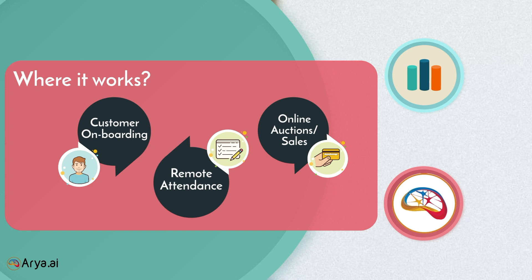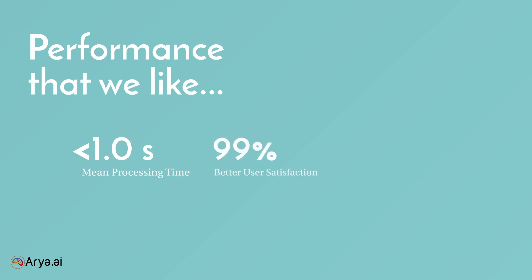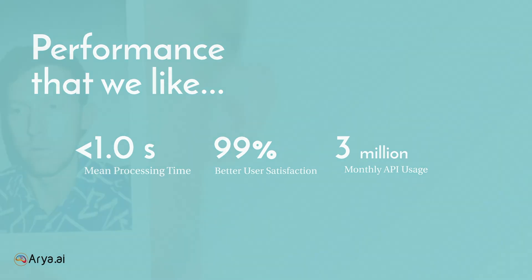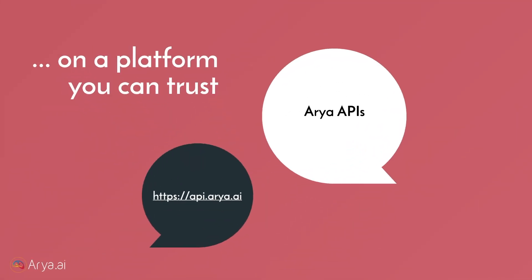Needless to say, our API can work everywhere. Our numbers alone speak about our performance. With a lightning fast processing time and API ready to use in production environment, our clients have had a tremendously better experience when integrating our technology and we are now 3 million API hits strong each month. Visit our platform now at api.aria.ai and explore the demo yourself.